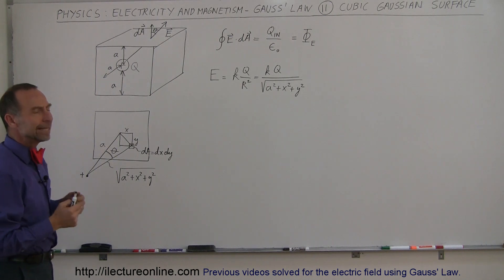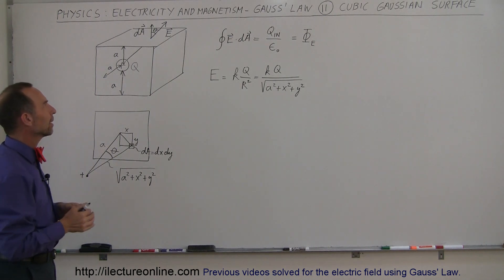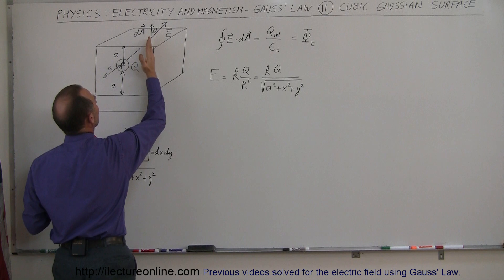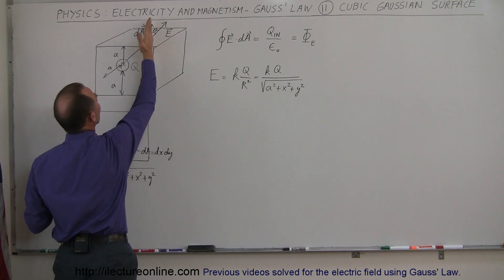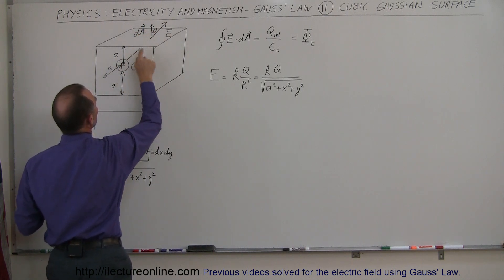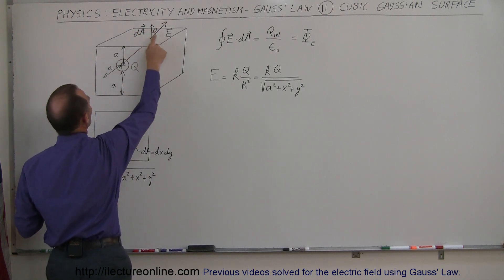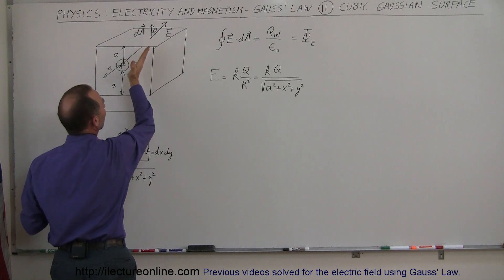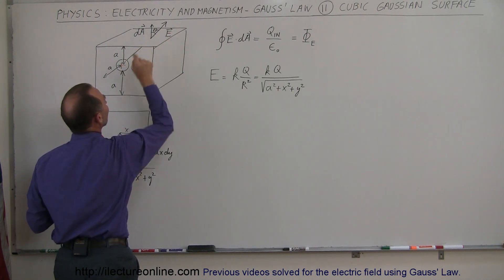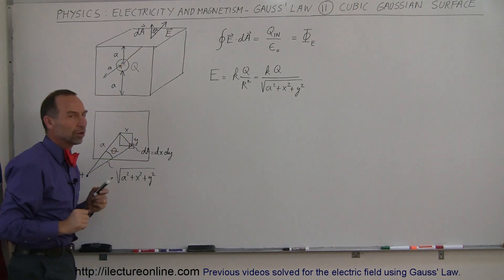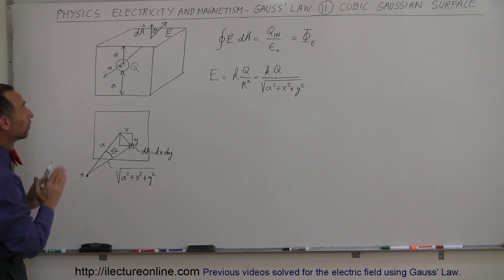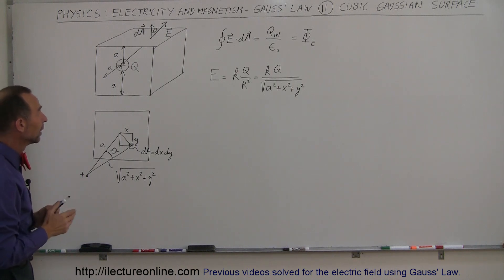Now, what about the E dot dA? Notice that the direction of dA will always be perpendicular away from the surface. As you get to certain points on the surface, the electric field will point away from the central charge — but not necessarily perpendicular to the face. So there's going to be an angle between them; let's call that angle theta.